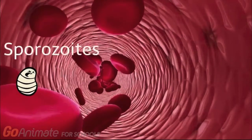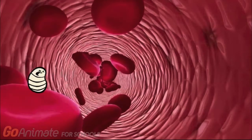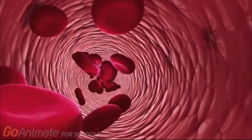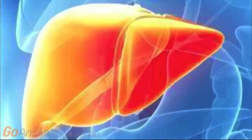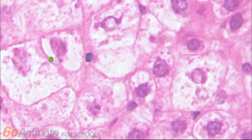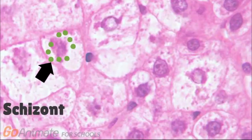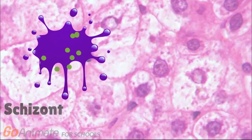Doctor: Inside your body, the parasite becomes a sporozoite, which first targets the liver cells, also known as hepatocytes. Over the next few days, the parasite will replicate within the liver cell, forming what is known as a schizont. As it continues to replicate, the infected hepatocyte can no longer contain all of the copies and will eventually rupture, leading to the spread of new parasites.